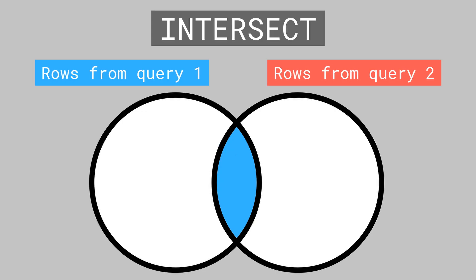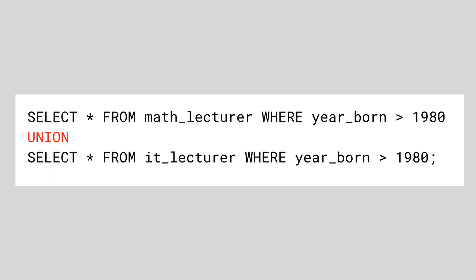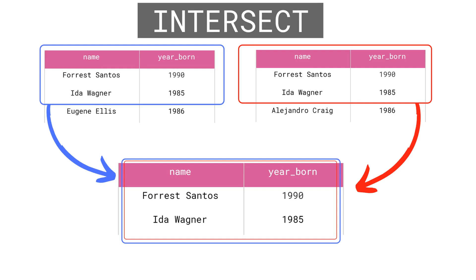The next set operation is intersect. Intersect works by only taking those rows that are present in both tables at the same time. If a row is only present in one of the tables it won't be shown at all. All we have to do is change union to intersect. This keyword finds the intersection between our two tables — in other words we'll only see lecturers that appear in both tables. We can see two rows in the resulting set since only two people teach both math and IT.